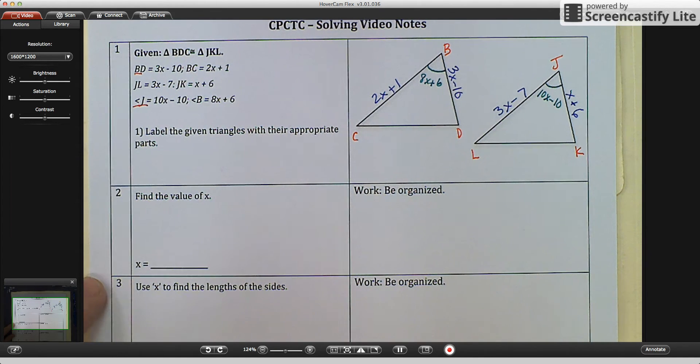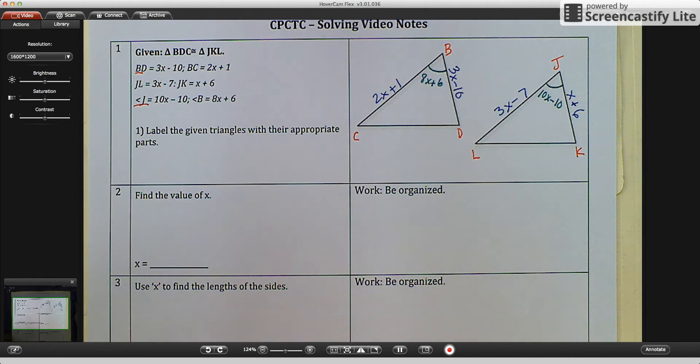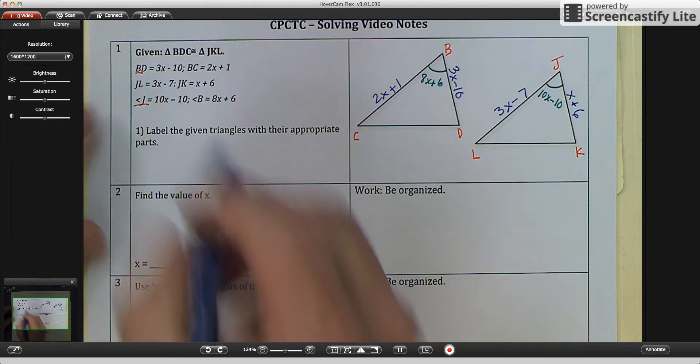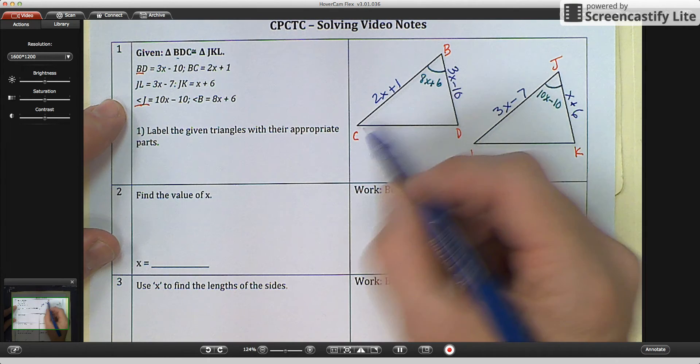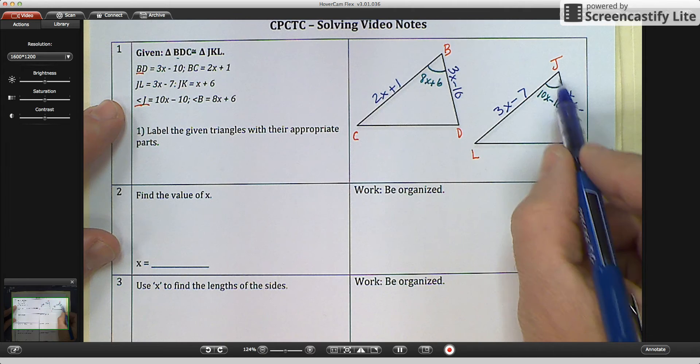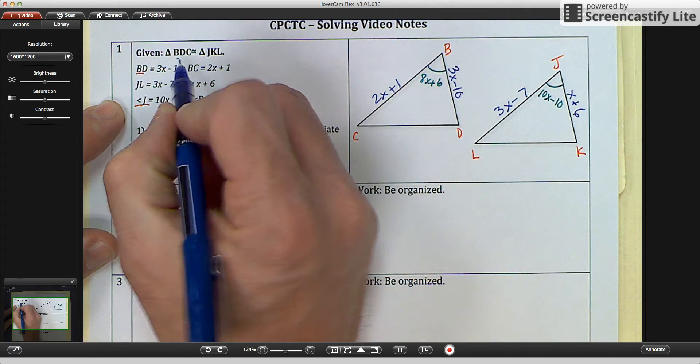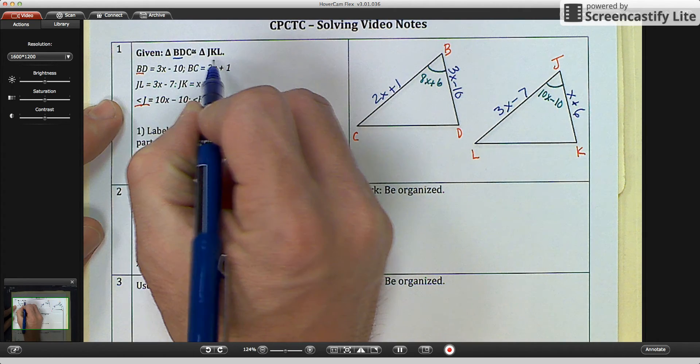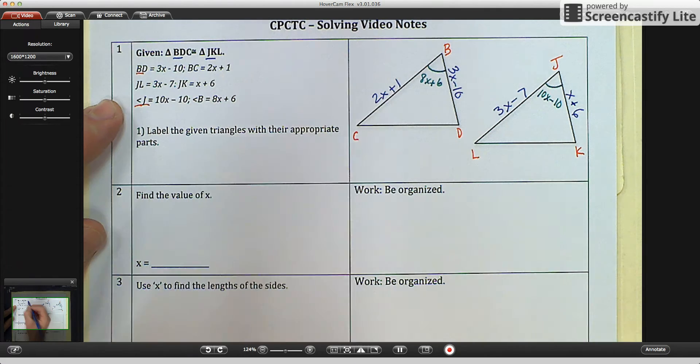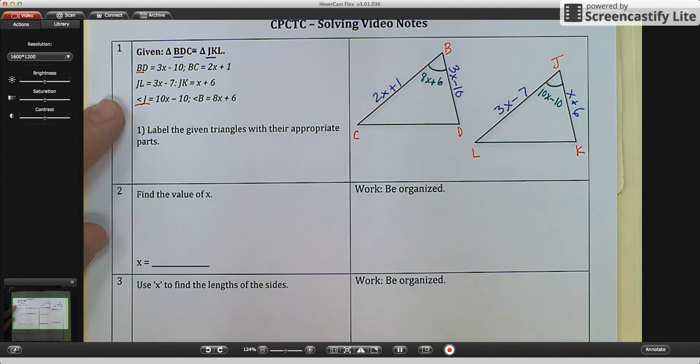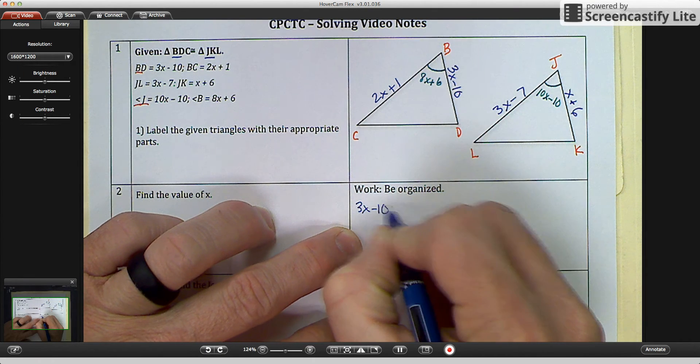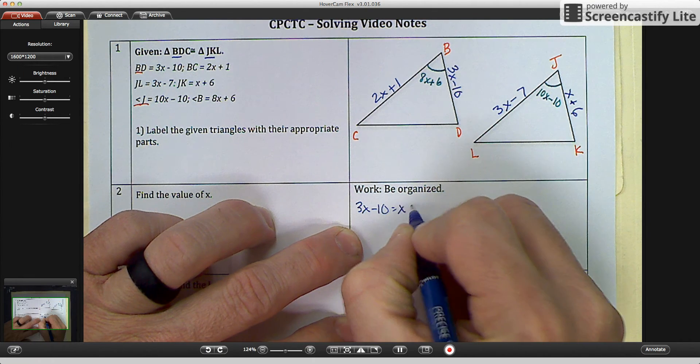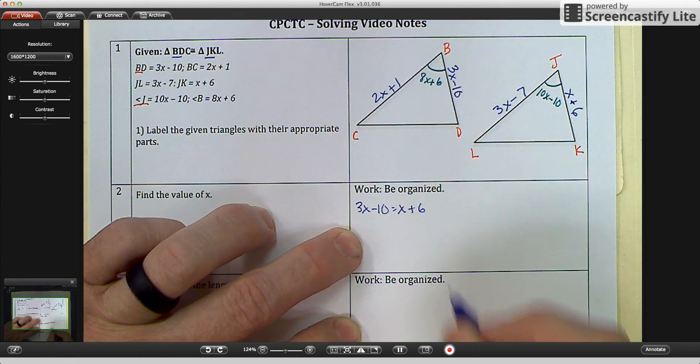Now we're going to go into part two, and it says find the value of X. Well, we have three different ways that we can find the value of X. We have side BD which is congruent to side JK. And the way we know that is because we look here at our congruent statement, BD first two letters, JK first two letters. So if they're congruent, we could set up this equation of 3X minus 10 equals X plus 6. And then we're going to solve for X that way.